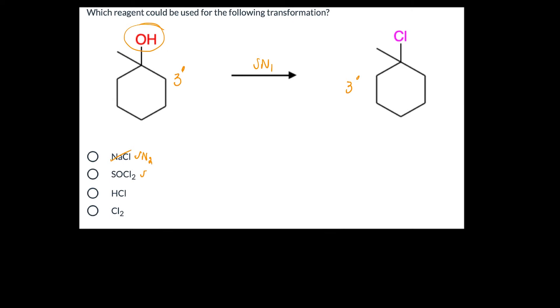SOCl2 generally occurs through an SN2 reaction in the presence of pyridine. And chlorine will not react with alcohols like this. HCl is the correct choice here.